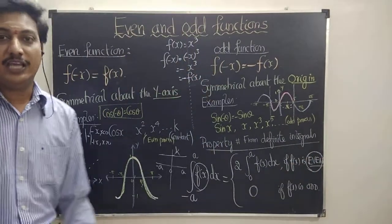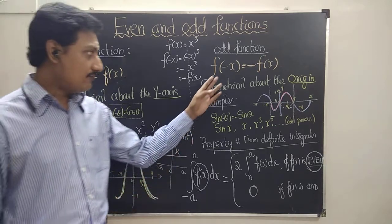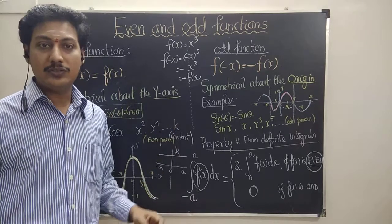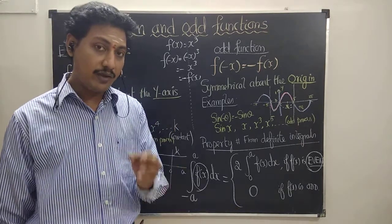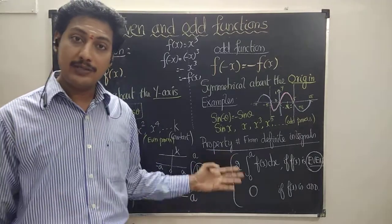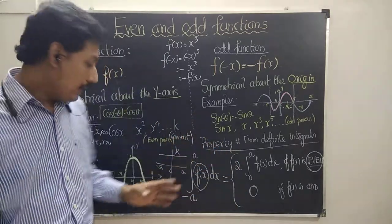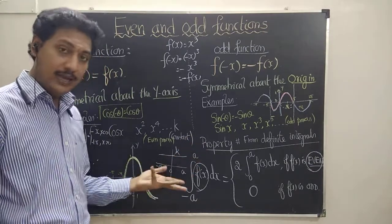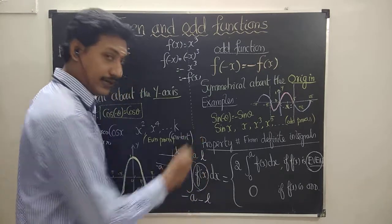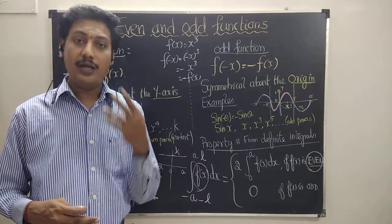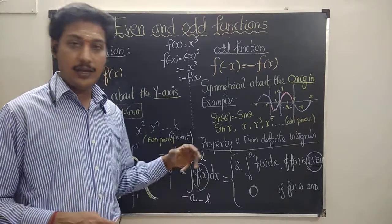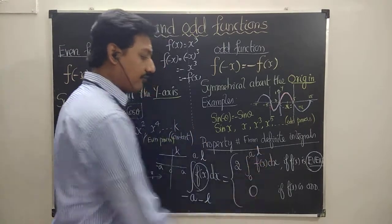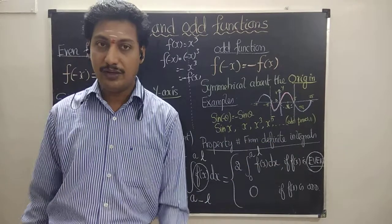If f(x) is an odd function, the integral from minus a to plus a equals zero, because the positive and negative areas cancel out — it forms a closed symmetric curve about the origin and the net value is zero. This property is applicable only when the function is defined on a symmetric interval minus a to a, or minus l to l, or minus pi to pi. So ∫₋ₗˡ f(x) dx = 2∫₀ˡ f(x) dx if even, and 0 if odd.